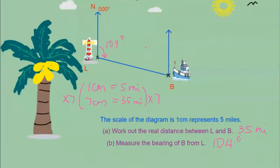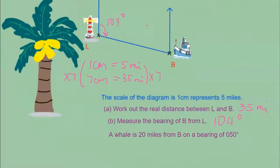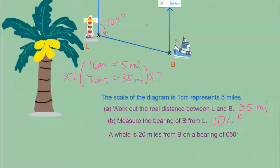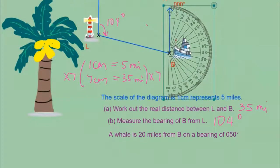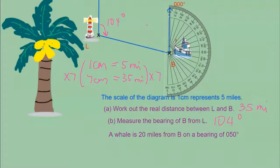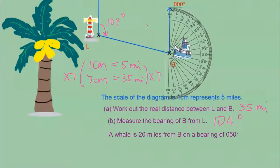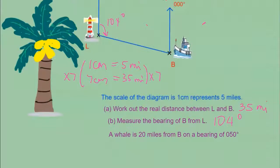The next scenario: a whale is 20 miles from B (the boat) on a bearing of 50 degrees. Since the whale is from B, B is your north. We have a new north at B and we start measuring from there at zero degrees. We're going to measure 50 degrees from the north, which is the boat. Using a protractor, zero is on the second line — find 50 degrees and put the mark where the angle is. Adjust the protractor for a more accurate reading and mark 50 degrees.